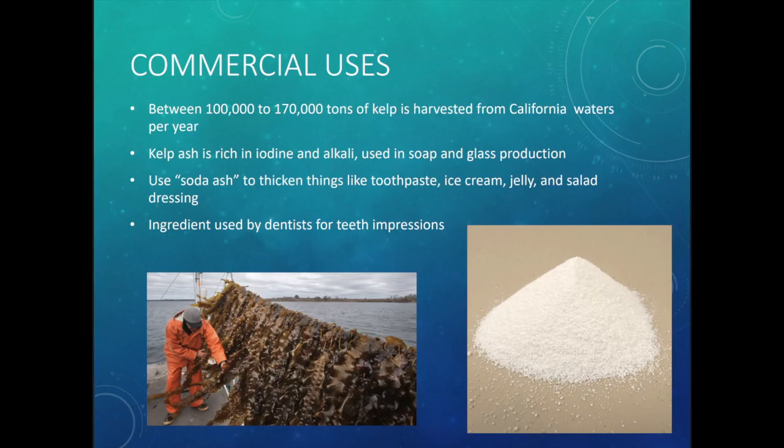Kelp is very important as a habitat, but it's also important for commercial use — humans actually use it. Between 100,000 to 170,000 tons of kelp is harvested from California waters every single year, and the harvest is very highly regulated — you need a permit. Kelp can be broken down into kelp ash, which is rich in iodine and alkali used in soap and glass production. It can also be turned into soda ash, a very fine powdery substance.